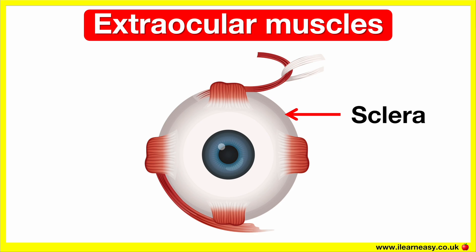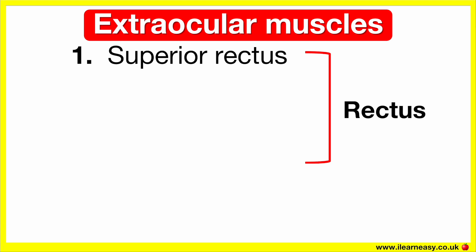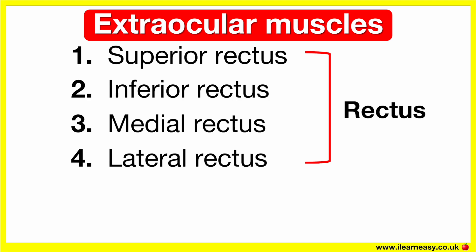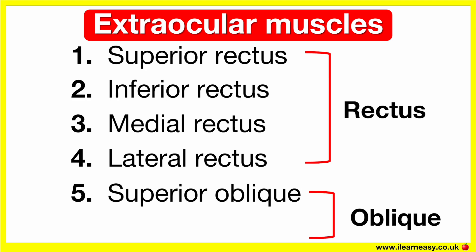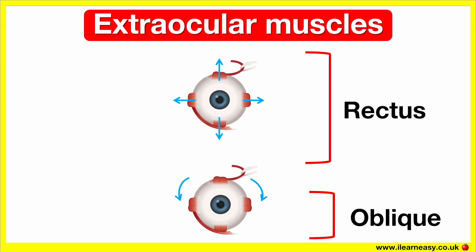There are six extraocular muscles per eye. There are four rectus muscles: superior rectus, inferior rectus, medial rectus, and lateral rectus. There are two oblique muscles: superior oblique and inferior oblique. The rectus muscles are responsible for straight movement — up, down, side to side. The oblique muscles are responsible for angled or rotational movement.